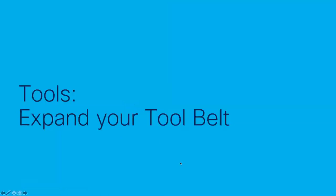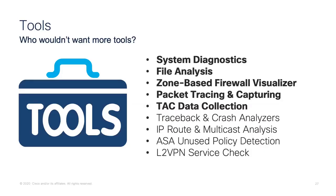Moving to the more specific product-based tools — when connected to a product, there's a list of capabilities at the top of the screen representing your tool belt of TAC-created, knowledge-infused systems. We're going to cover: system diagnostics, file analysis, zone-based firewall visualizer, packet capture and tracing capabilities, and TAC data collection. Additional tools available include traceback and crash analyzers, routing and multicast analysis tools, policy cleanup wizards, and VPN tooling around LAN-to-LAN VPN checks.